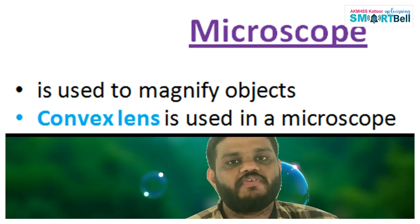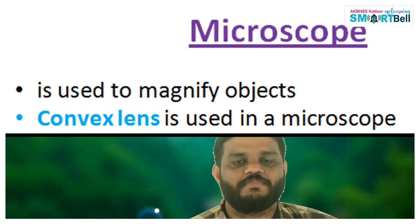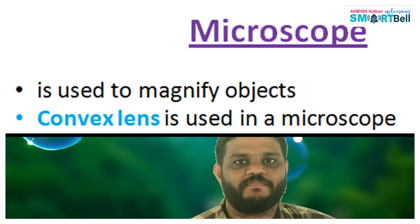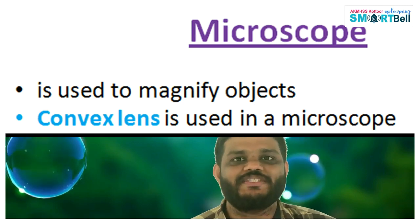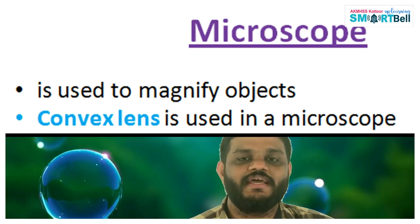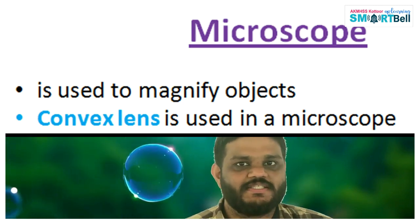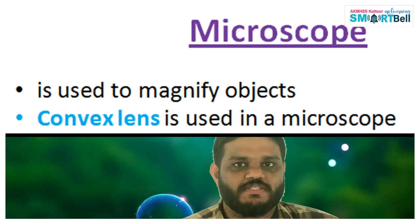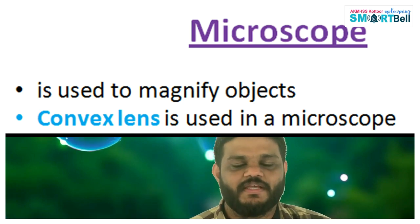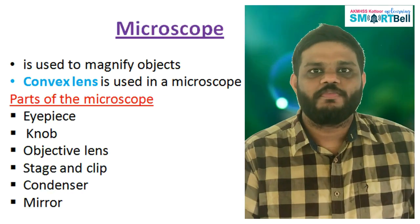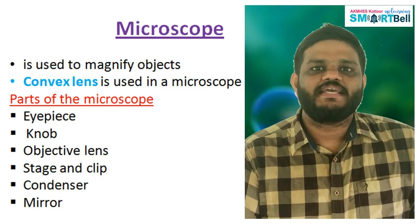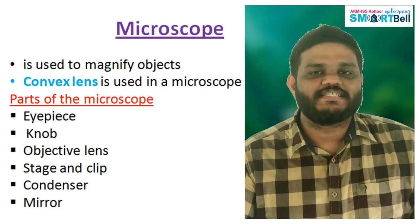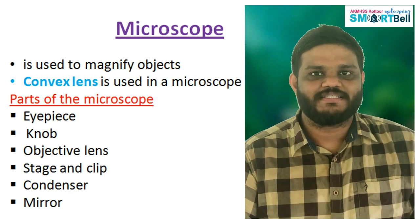What are the different parts of this microscope? We are going to study about the different parts and the functions of each of these parts. A microscope basically has 6 different parts.